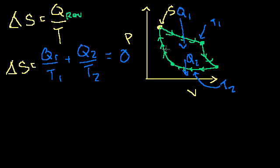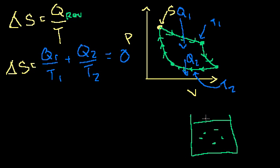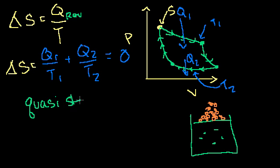Before showing you why it has to be reversible, let me review what reversibility means. In order to even define a path on the PV diagram, the system has to be pretty close to equilibrium the whole time. That's why throughout these videos I've been drawing a piston with grains of sand instead of one big weight - adding or removing one big weight would throw the system out of equilibrium. Moving grains of sand keeps the system always close to equilibrium. That's called quasi-static, meaning you're always in quasi-equilibrium so your state variables are always defined.